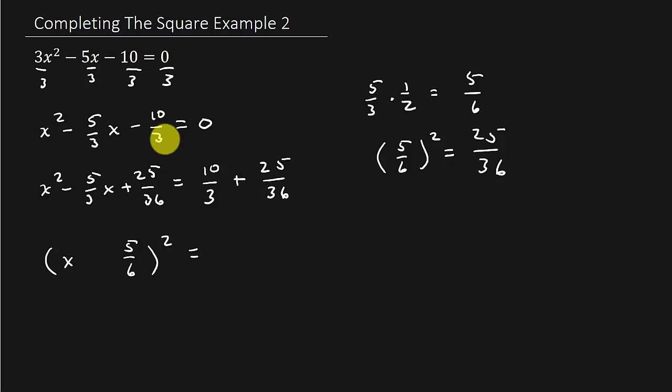Square root of the first term, square root of the last term, and then look at the sign in front of the term in the middle. It's a minus. So that's a minus.